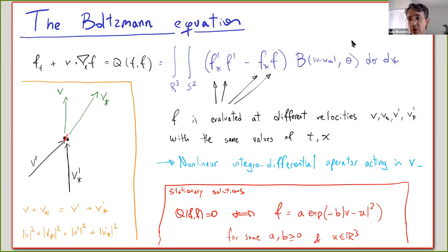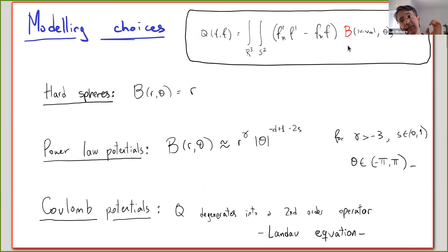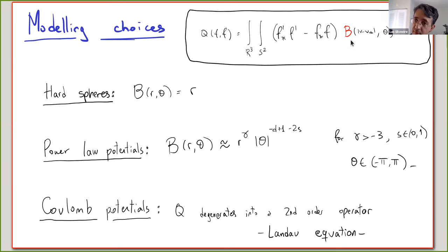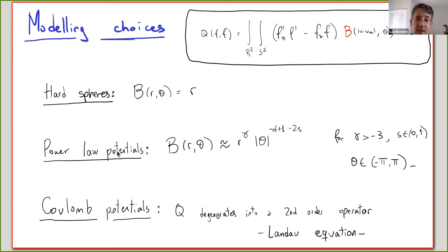There are different modeling choices for kernel B depending on how particles interact microscopically. You may think of particles as billiard balls bouncing elastically, or as sponges interacting differently, or as repelling each other by some potential. Those modeling choices are reflected in different versions of kernel B. For the hard spheres model — particles bouncing against each other — you get a relatively simple kernel B. For the power law potential — particles repelling by a power law when sufficiently close — the kernel B is a power of r times a negative power of the deviation angle.